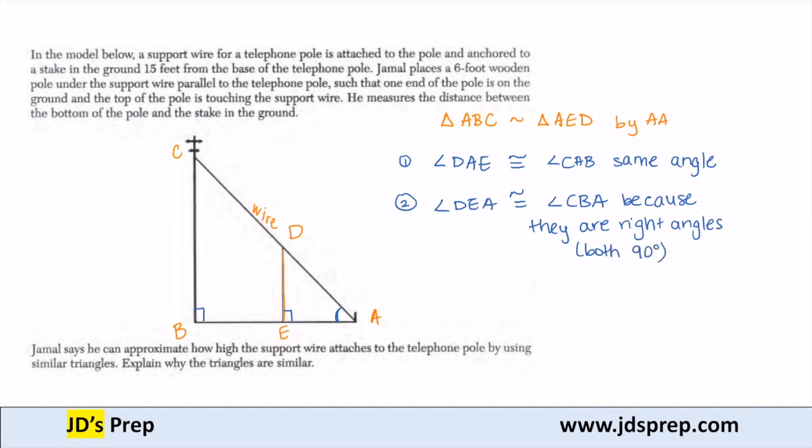So I have two angles that are congruent, which means these triangles are similar by angle, angle.